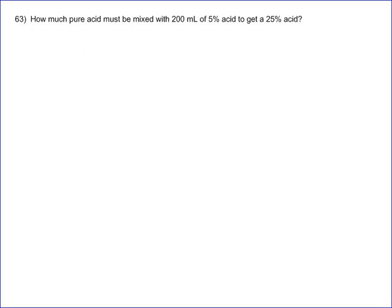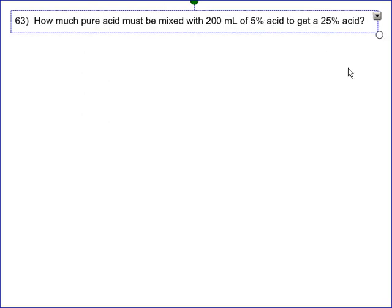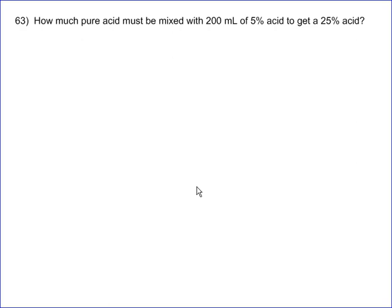Okay, so on this problem it says, how much pure acid must be mixed with 200 milliliters of 5% acid to get 25% acid?